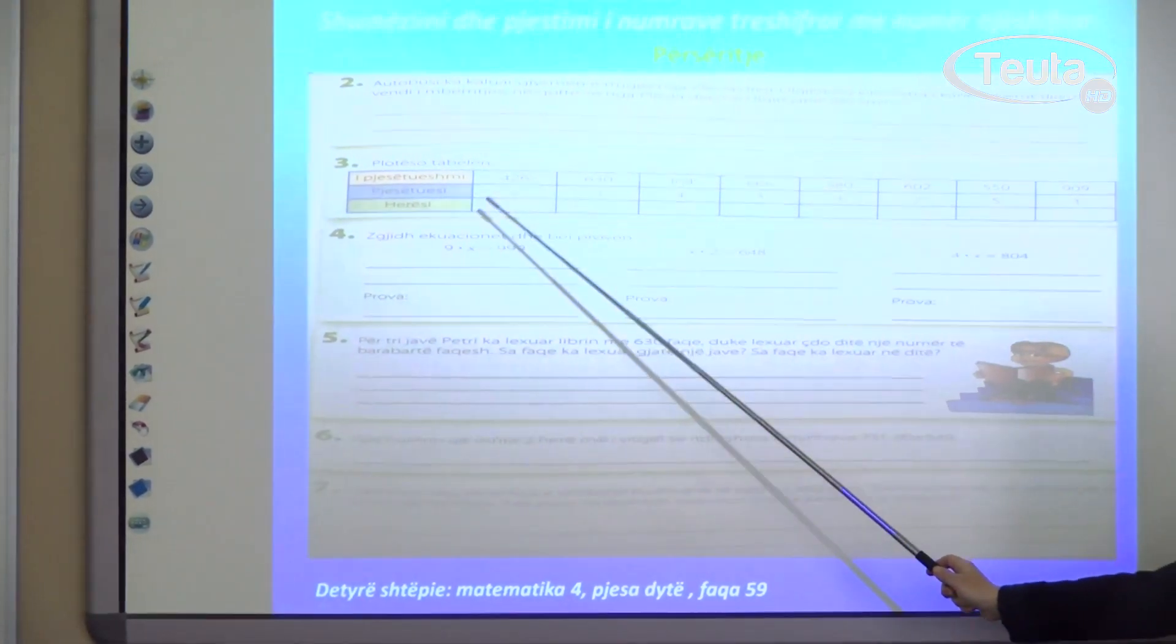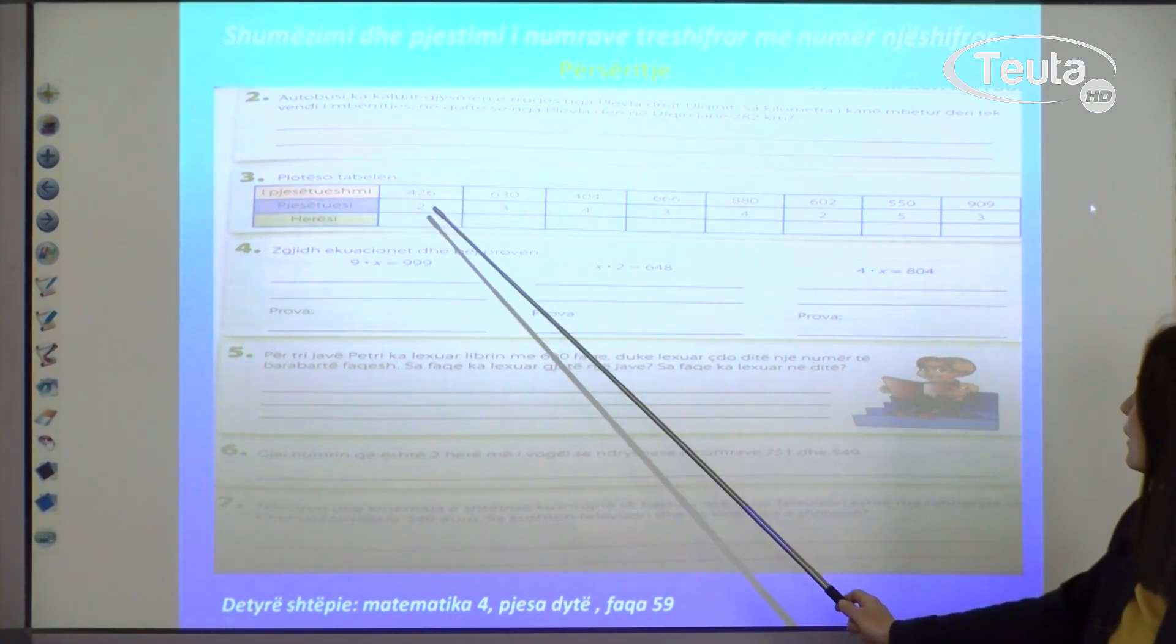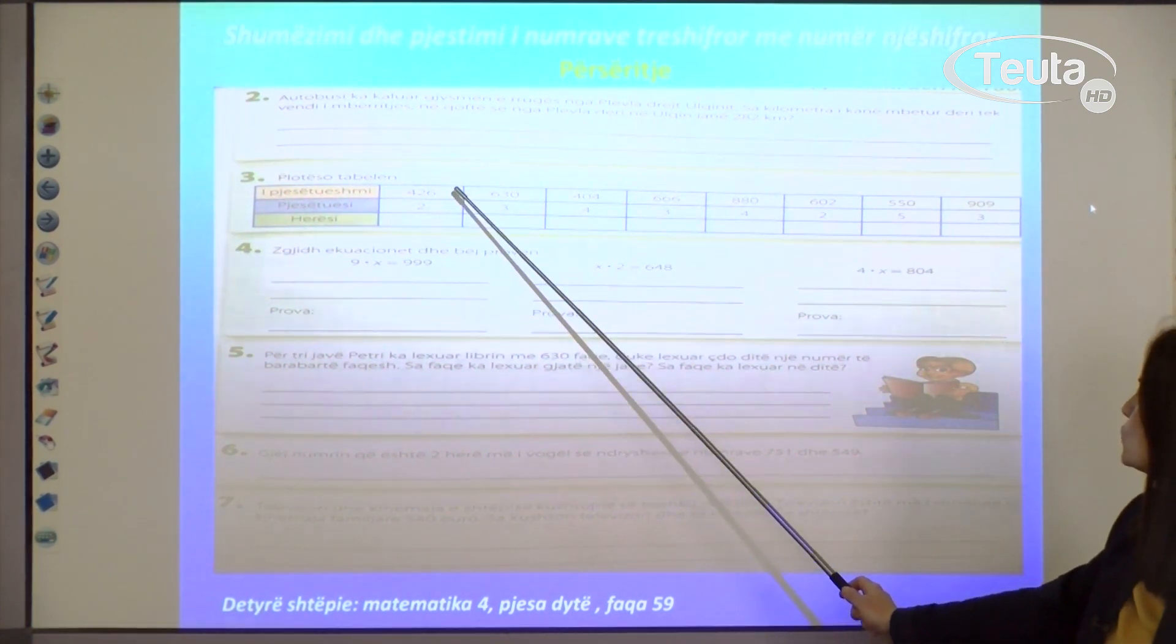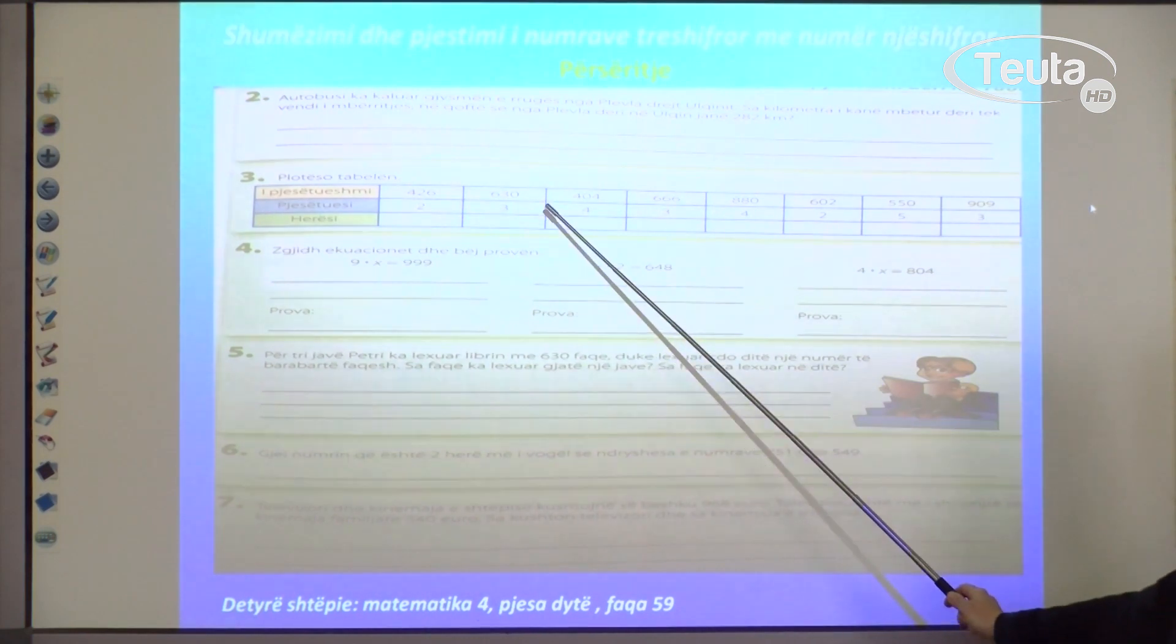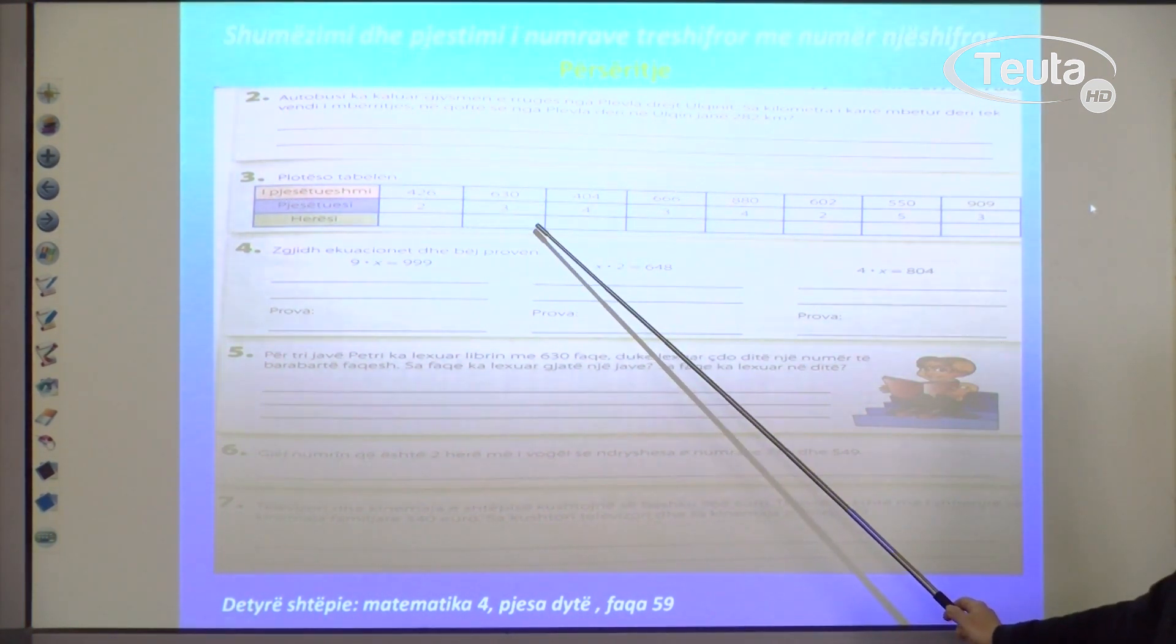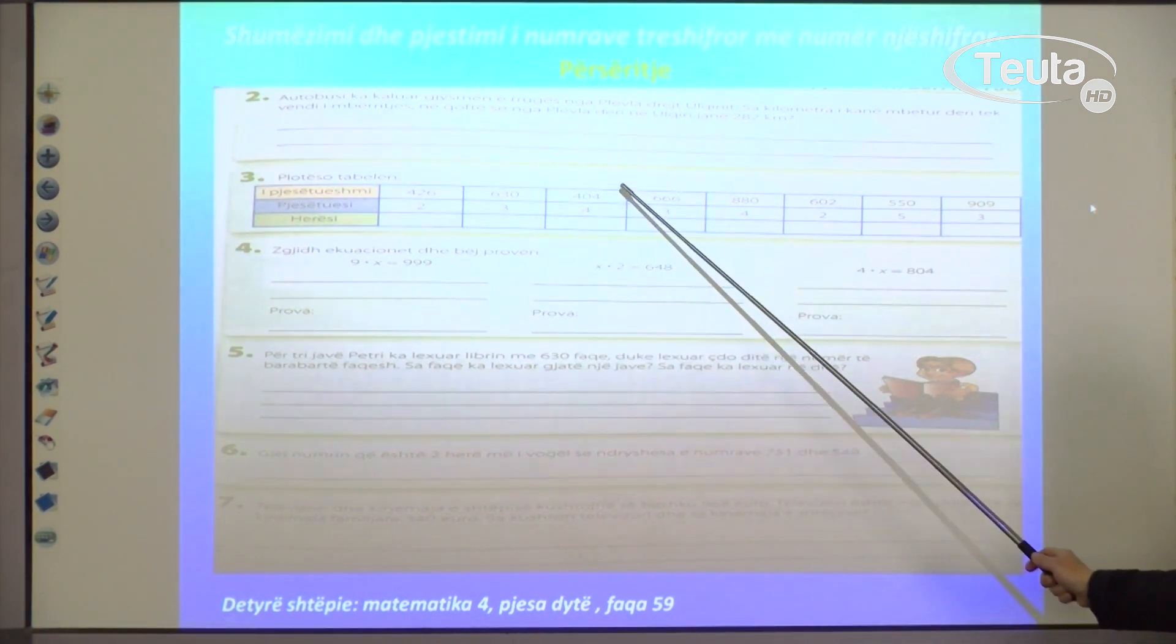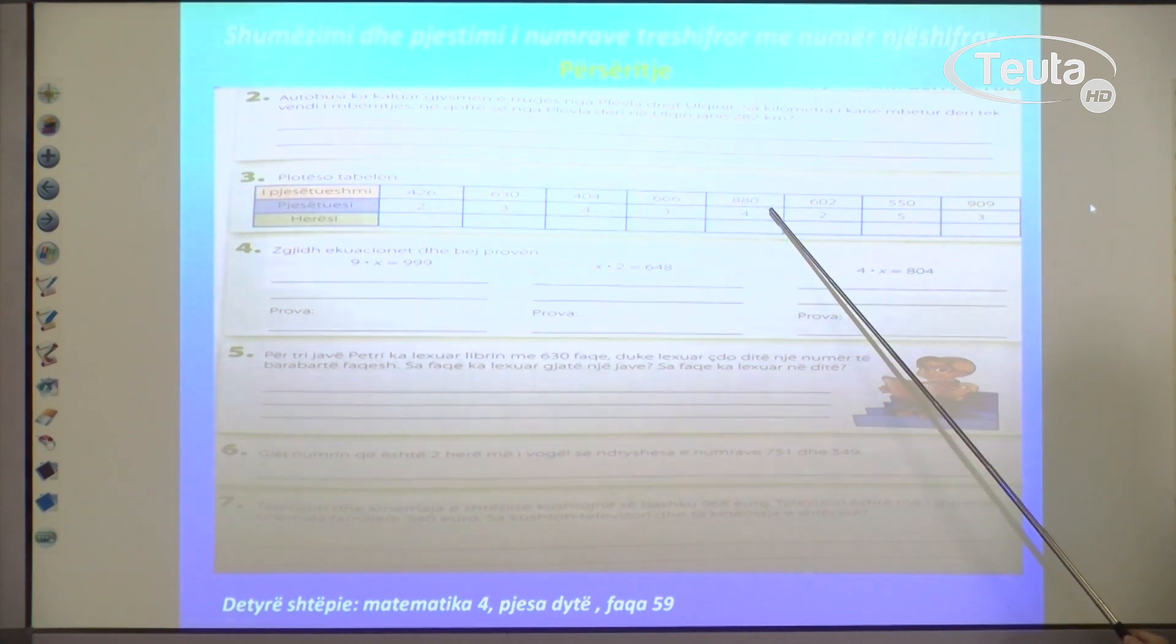Exercise 3: Complete the table. You need to divide. The dividend and divisor, you need to find the quotient for all of them. 426 divided by 2, and you'll find the quotient using written division. 630 divided by 3, find the quotient by dividing these two numbers in writing. 404 divided by 4. 666 divided by 3. 180 divided by 4. 602 divided by 4. 550 divided by 5. 909 divided by 3.